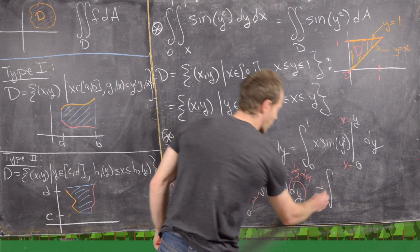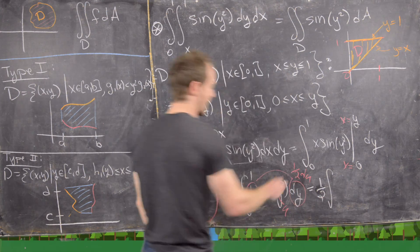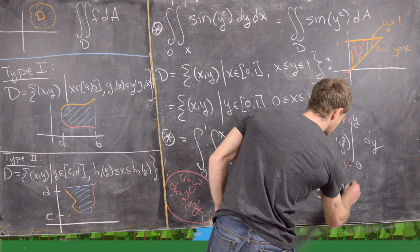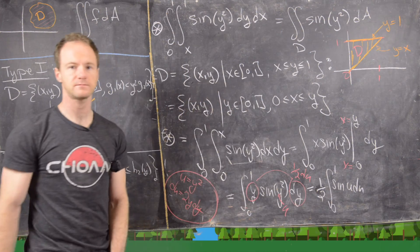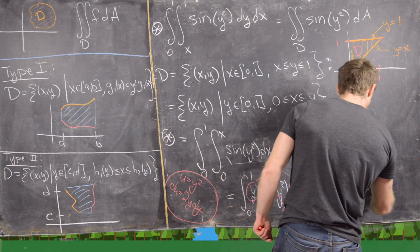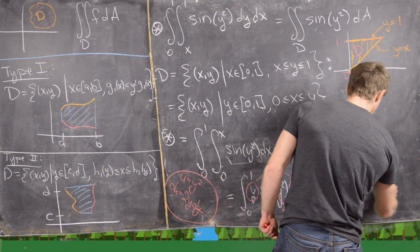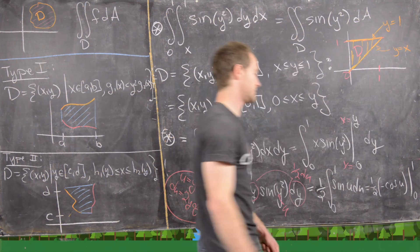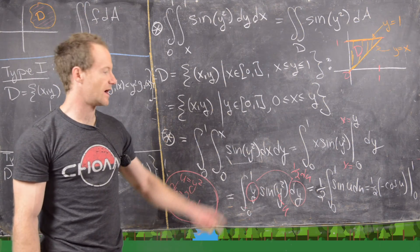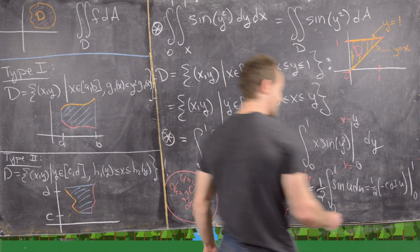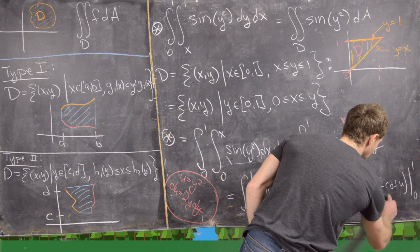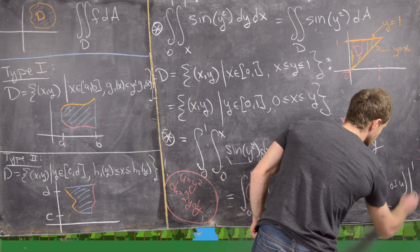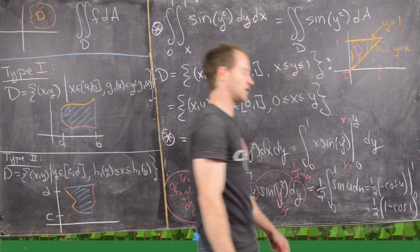With u = y², the bounds stay from 0 to 1 (since u(0) = 0 and u(1) = 1). The integral becomes ½ times the integral from 0 to 1 of sin(u) du, which equals ½ · [−cos(u)] from 0 to 1. Evaluating: ½ · (cos(0) − cos(1)) = ½ · (1 − cos(1)), where cos(1) is left in exact form.